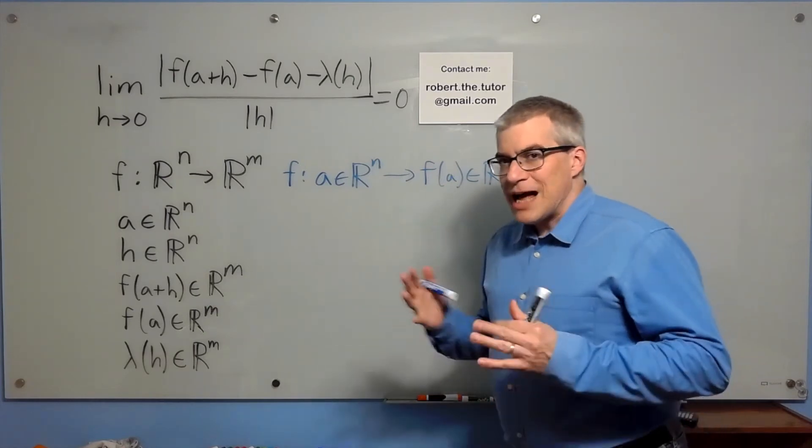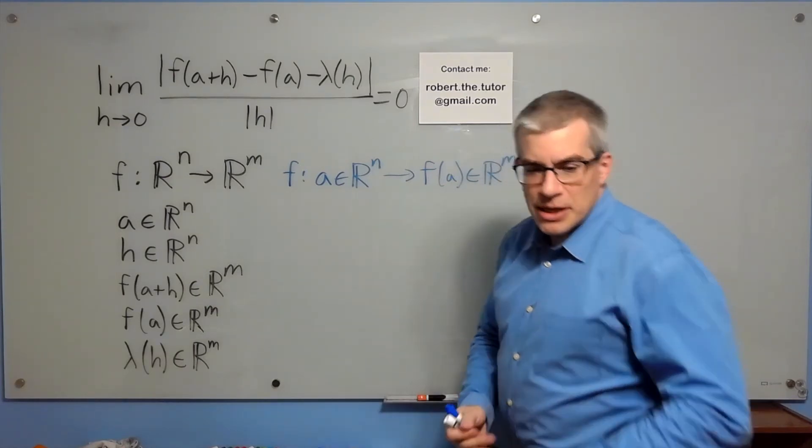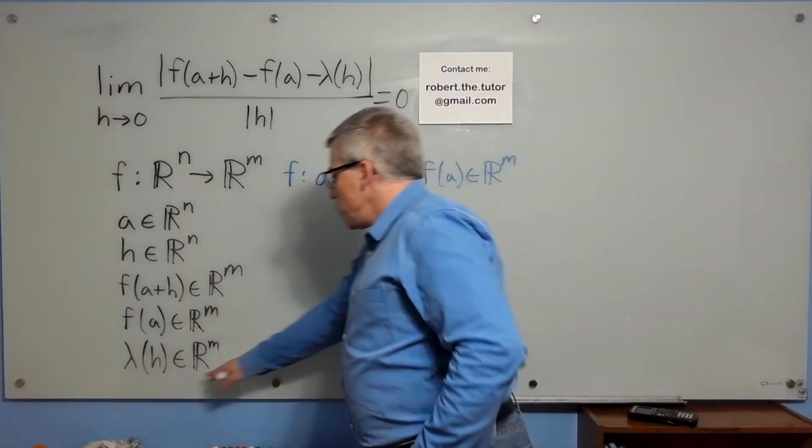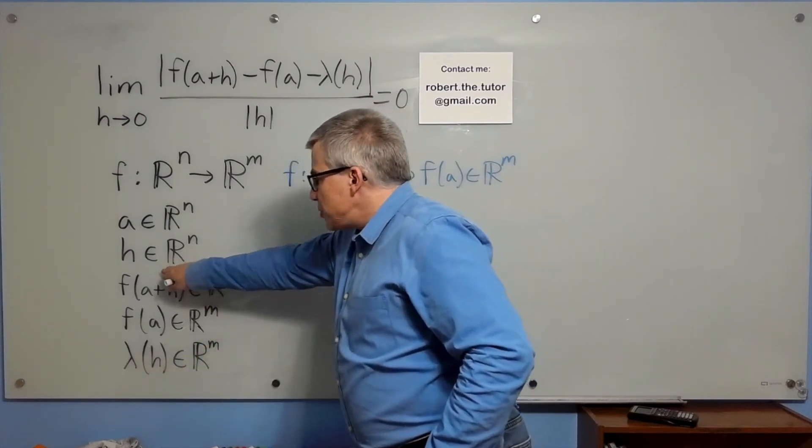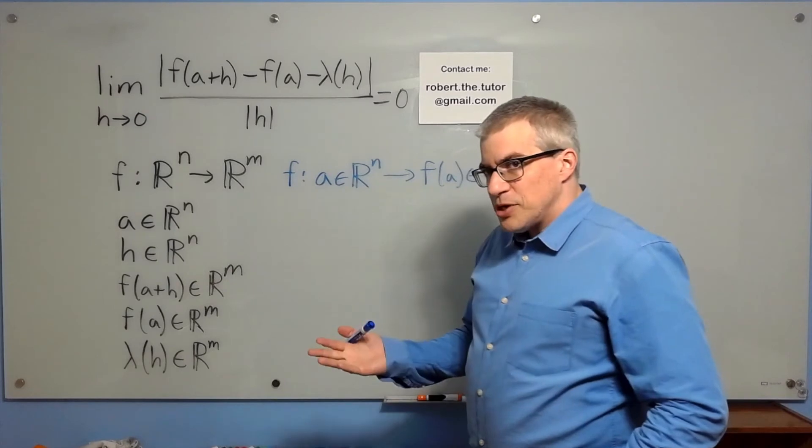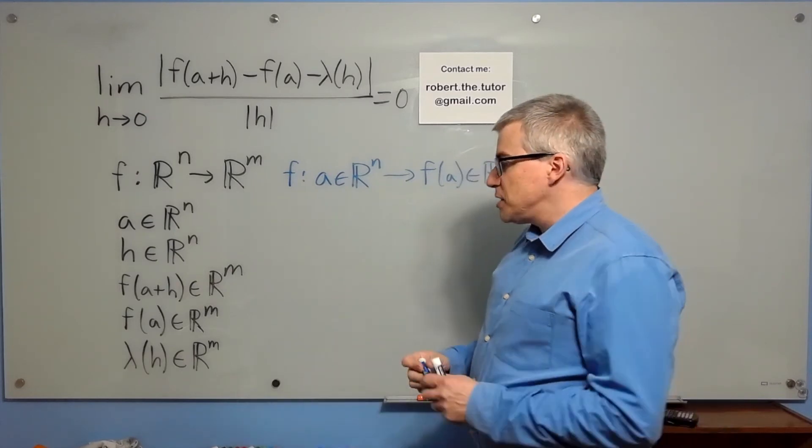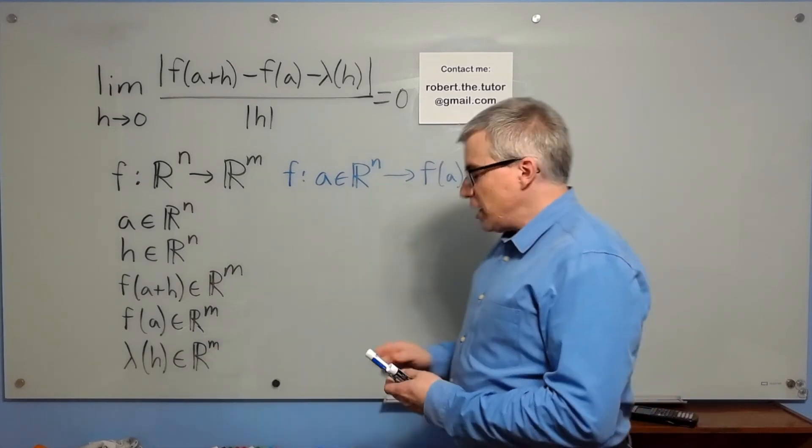When things are being confusingly abstract, make them as concrete as you possibly can. Now we know that lambda of h is R^m and we know that h is an element of R^n, so lambda functions the same way as f does in terms of its domain and range.